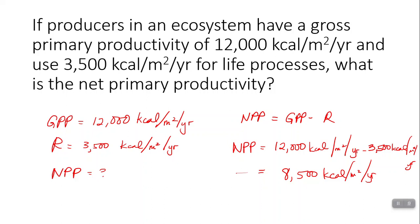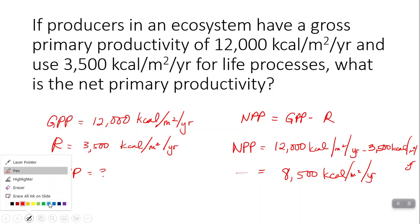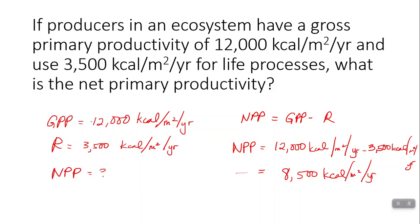If there's a particularly cloudy year and a lot less sunlight gets through, gross primary productivity might drop from 12,000 to 10,000 kilocalories per meter squared per year. Since GPP dropped by 2,000, the net primary productivity calculation changes — you're still using the same amount for respiration, but now instead of having 8,500 kilocalories to support the rest of the ecosystem, you only have 6,500 kilocalories, meaning fewer consumers can live off of this. This shows that changing the level of primary productivity affects the entire ecosystem — the kind of conclusion you could be asked to draw on a free response question.